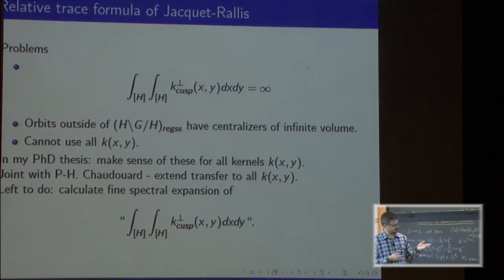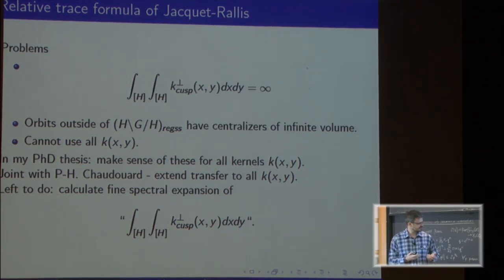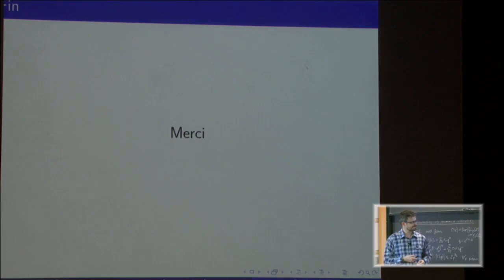Now basically the geometric part is complete, and what's left to do is get a hold of—I can define now this integral, but we need a more refined expansion of this. We need to understand it spectrally, what it means, in order to extend results of Wei Zhang towards the Gan-Gross-Prasad conjecture. This is a project I'm working on currently, but I also like to think about other types of periods and their relations to relative trace formula. Thank you.